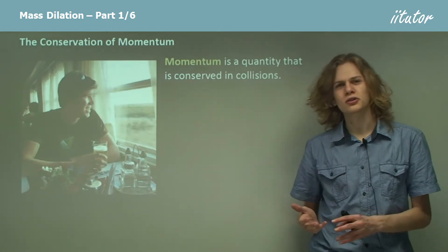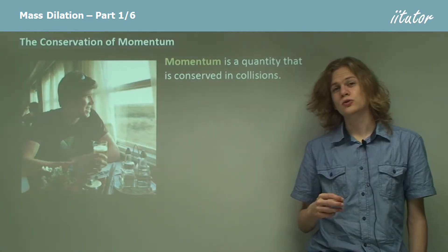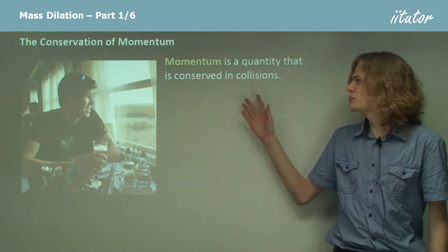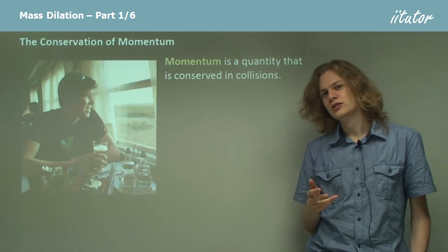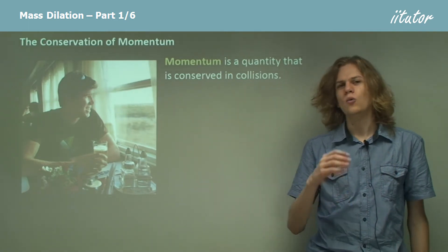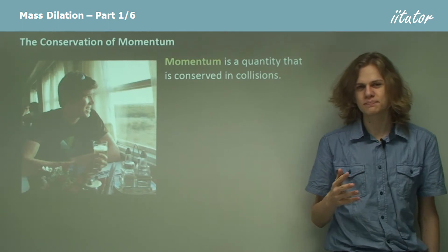Now we know that momentum is conserved in collisions. It turns out that even if we go down to a very small scale and look at individual atoms, we can still see momentum being conserved no matter how fast they're moving. So we're going to assume for the moment that the conservation of momentum will always remain the same, even if we're traveling at relativistic speeds.